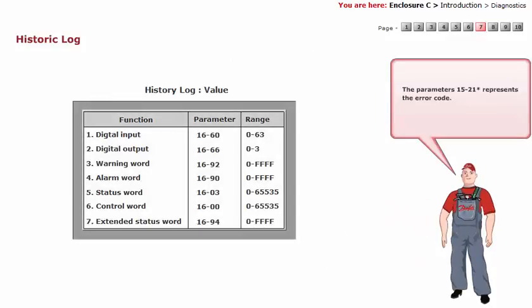The parameters 1521 represents the error code. For more information on historic log, refer the section 152 of the design guide.